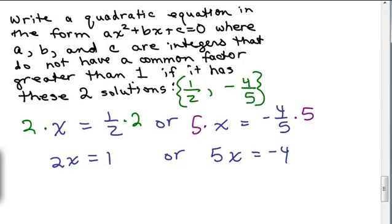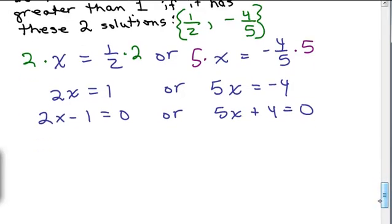The right-hand side, this becomes 5x equals negative 4. Set each of those equal to 0 to see what the factors were. So the very last step here is to multiply those two factors together using the FOIL method or any method you use for multiplying binomials.